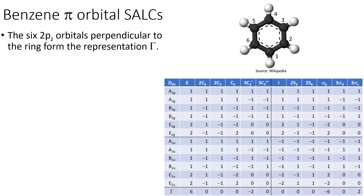Now we're going to move on to benzene, looking specifically at the pi orbitals — the six 2pz orbitals perpendicular to the ring. We're going to form a representation of these six orbitals, which we call capital gamma. You can see this at the bottom of the D6H character table for benzene. These six pz orbitals give identity returning 6, as all six are left unchanged. The rotations C6, C3, C2 move all the orbitals off their position, so they all return zero for the character.